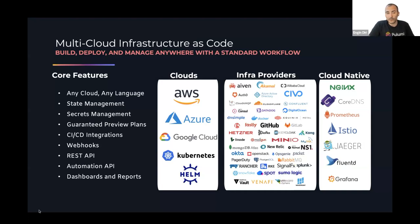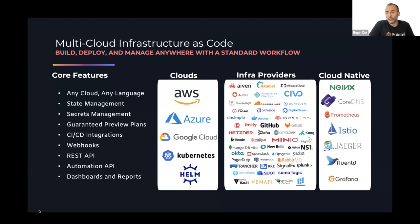CI/CD integration works with every system. We also have webhooks — including recently launched Microsoft Teams integration and Slack integration. There's a REST API, so the Pulumi Backstage plugin communicates with it directly. The Automation API is an advanced topic where you can programmatically call Pulumi without needing CLI commands like up, down, or destroy. Dashboards and reports are useful for teams with shared responsibility.